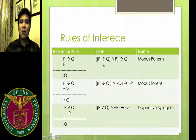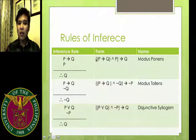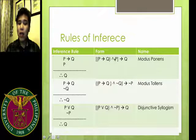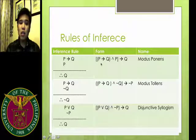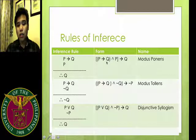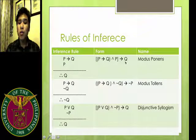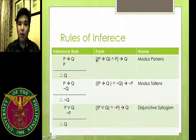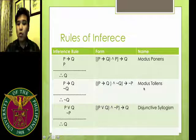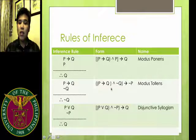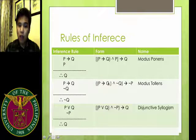What about modus ponens? Modus ponens states that if there is an implication P implies Q, and you conjoin P as a premise, then you can conclude Q — the conclusion. What about modus tollens? For modus tollens, if there is an implication P implies Q and it's conjoined with the negation of the conclusion, you can conclude the negation of the premise.